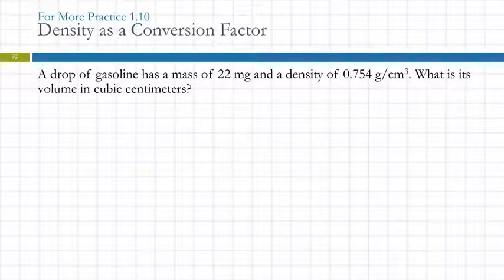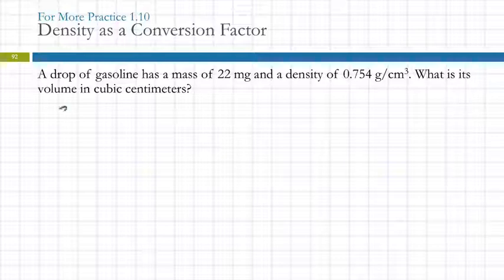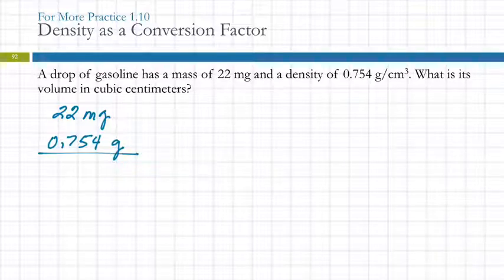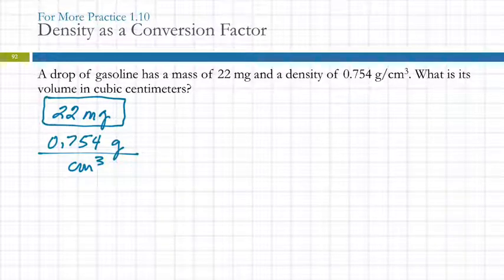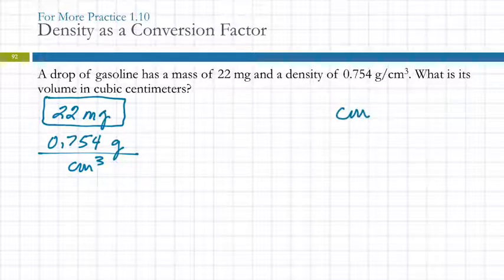Any questions? Here's another one with density as a conversion factor. Even if you're good at algebra, please — just for this chapter — try using density as a conversion factor. A drop of gasoline has a mass of 22 milligrams. The density is 0.754 grams per cubic centimeter. What's its volume in cubic centimeters? Let's write down the numbers: 22 milligrams and 0.754 — write that as a vertical fraction, grams over cubic centimeters. Which do we start with? The milligrams, because that cannot be a conversion factor, so it's most likely the one we start with. We're trying to find cubic centimeters.